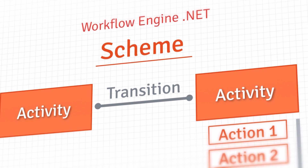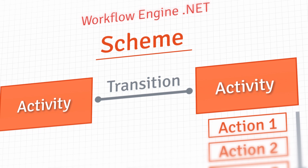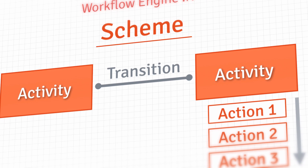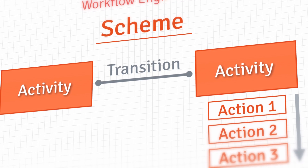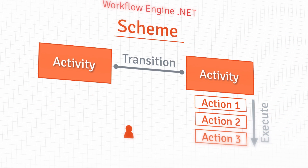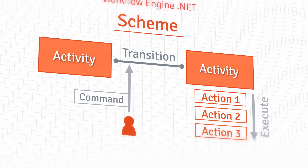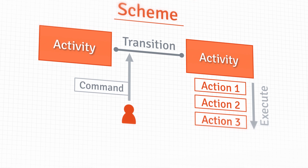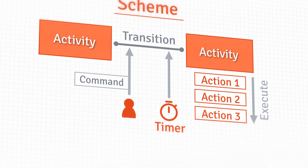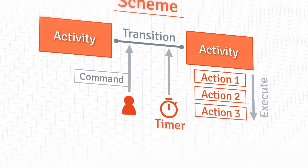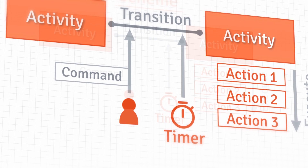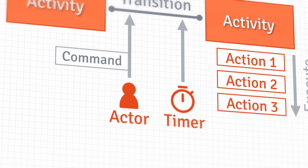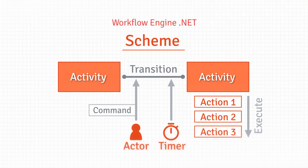A transition is a transition between activities; it can be executed automatically or triggered by a command or timer, and may contain conditions to help organize the branches of the work process. A command is a user command or an external event that triggers a transition. A timer is an internal event that triggers a transition at a specified time or after a specified time period. An actor is a rule that restricts access to a command.